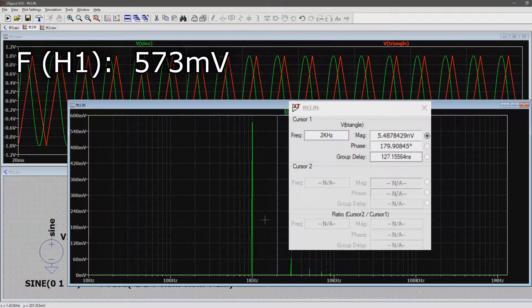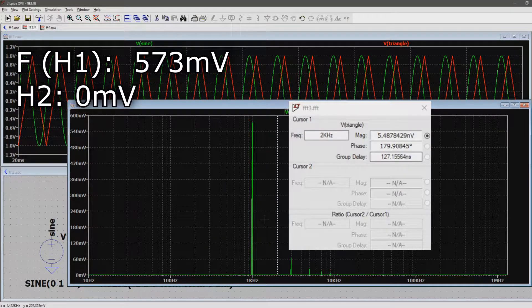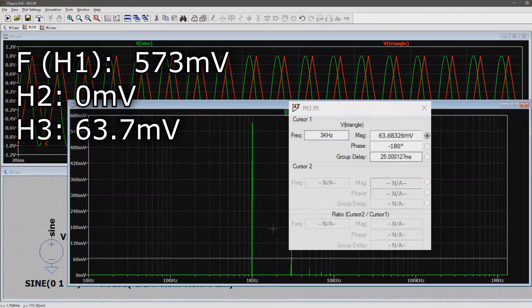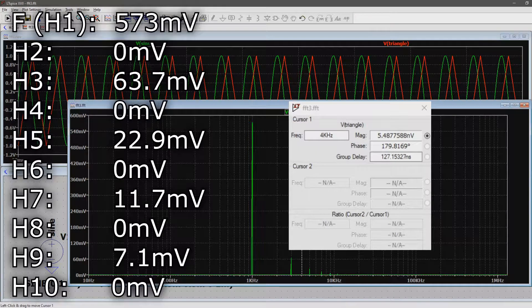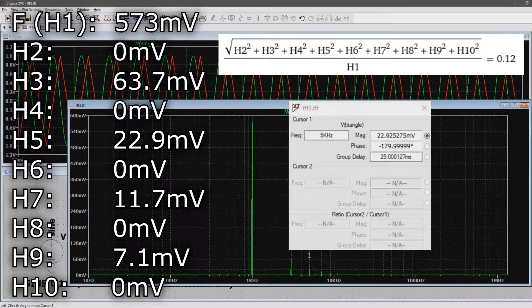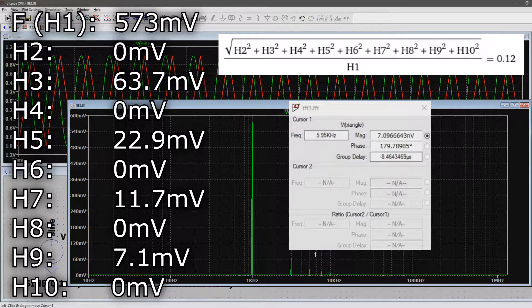The second harmonic of 2kHz is basically non-existent, so 0V RMS. The third harmonic of 3kHz is at 63.7mV RMS. We continue noting down these voltages until we reach the 10th harmonic at 10kHz.